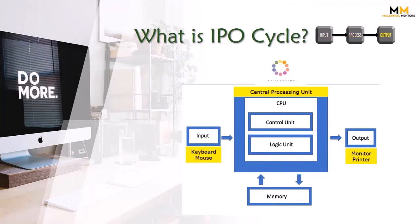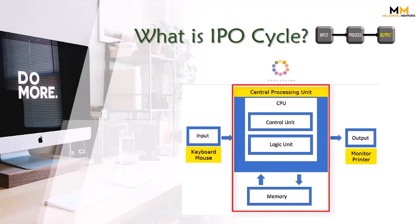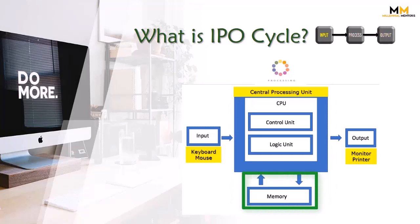Through an input device like a keyboard or mouse, we give input data to the central processing unit, which processes and stores it, then gives us the output on our desired output device like a monitor or printer. We can view output on the monitor or get a hard copy from the printer.